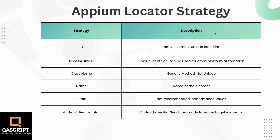Then we have got the name, which is basically the name of the element. Then we have got XPath. This is very similar to finding any particular element in an XML document, but keep in mind that it is not a recommended location strategy when you are working with Appium because it has got its own performance issues and it is quite slow compared to any other Appium locators. So if you have got an ID, accessibility ID, or even a class name, you should always use these locators instead of using XPath.